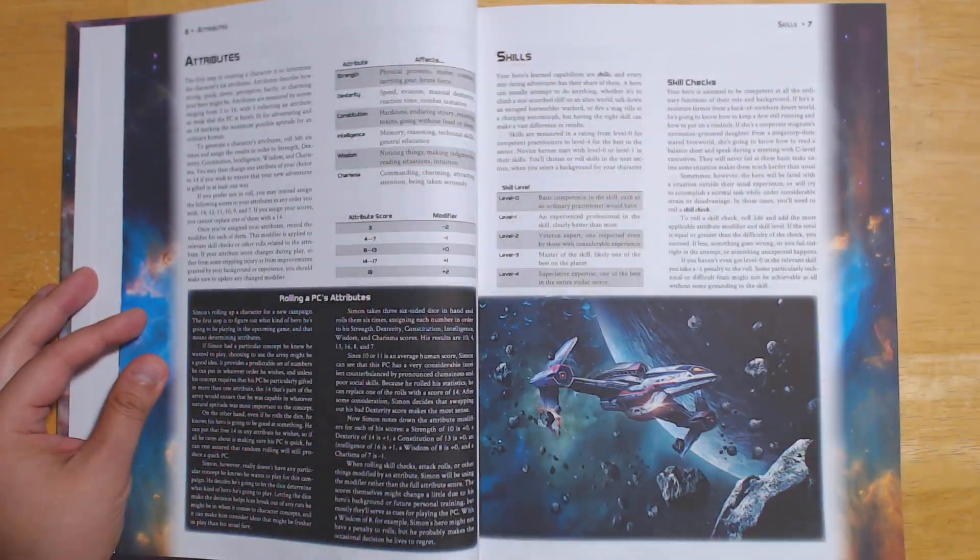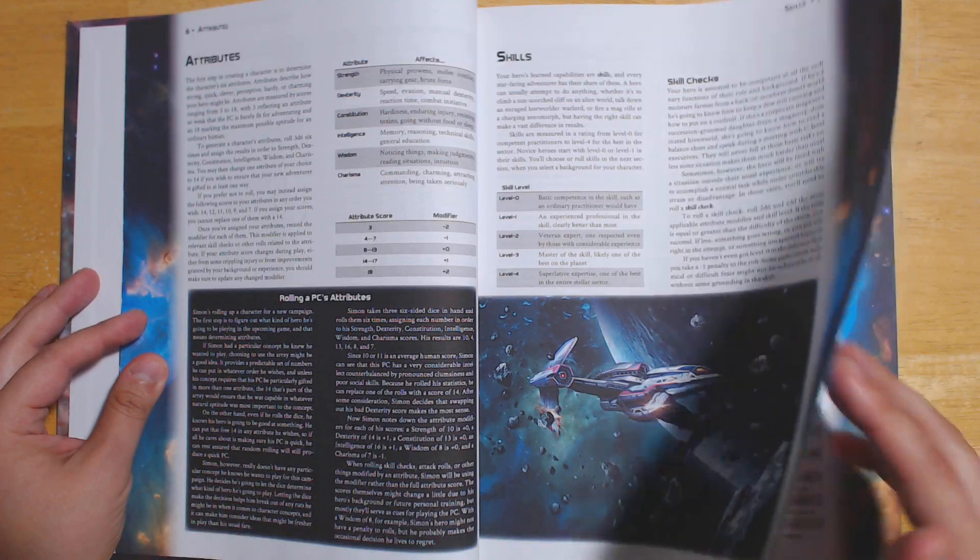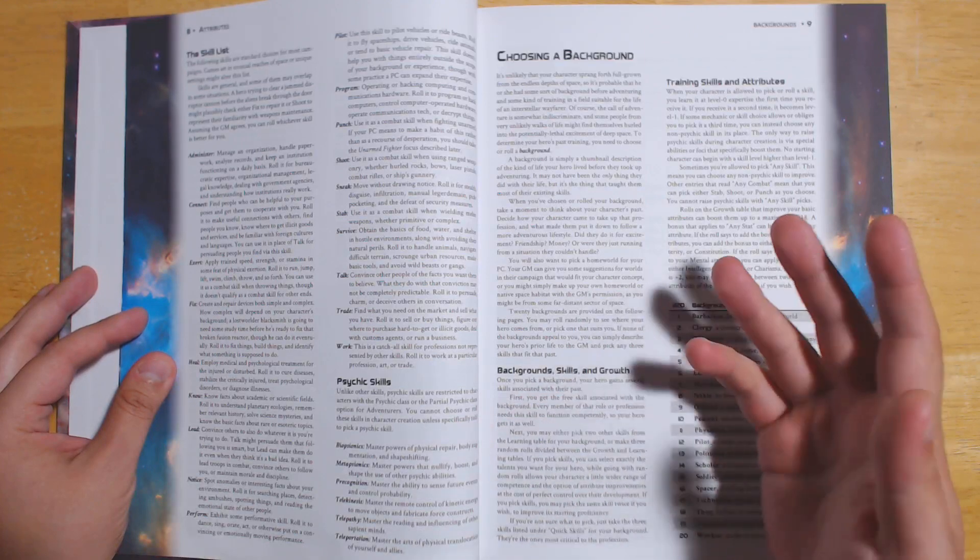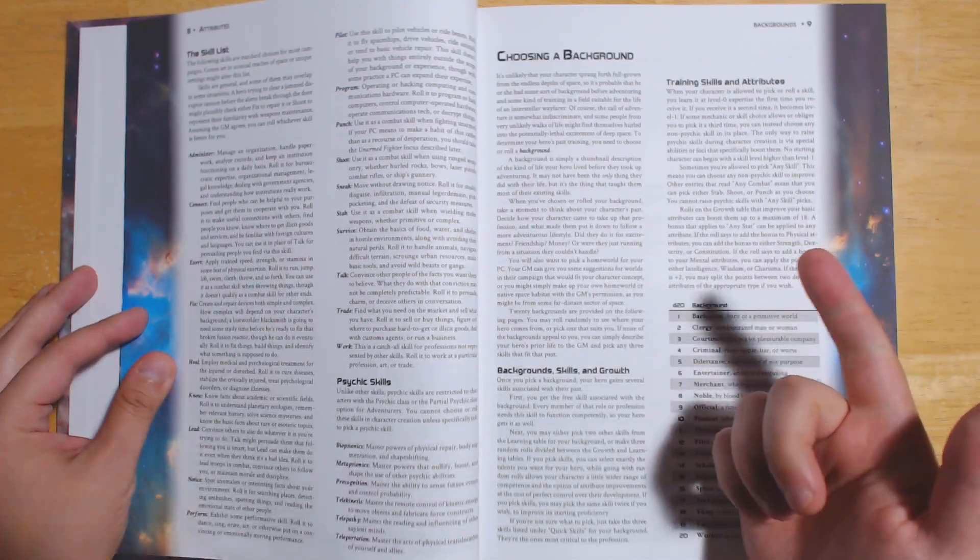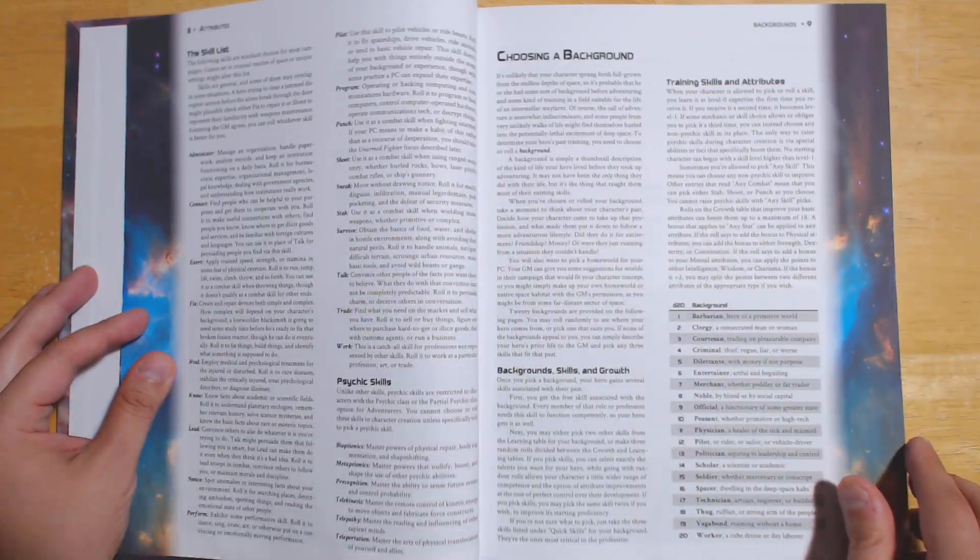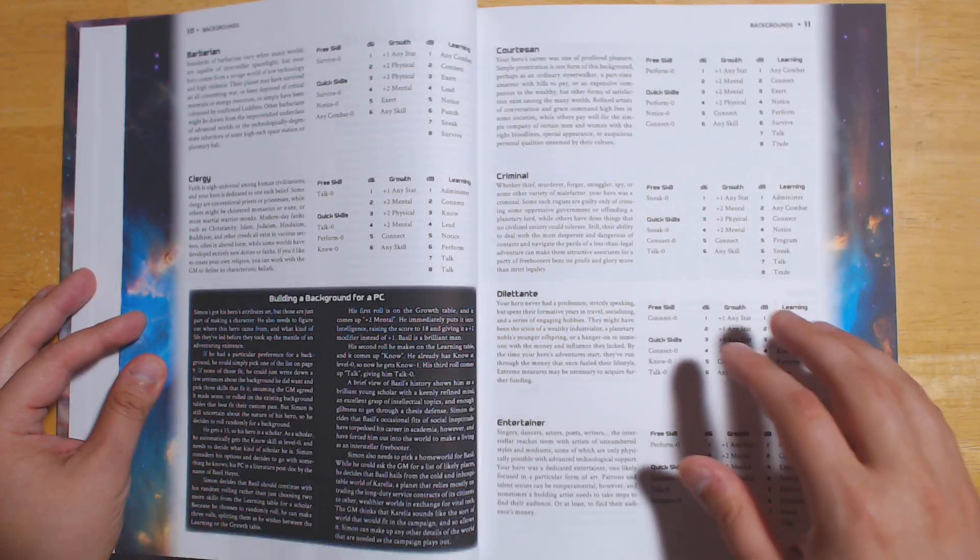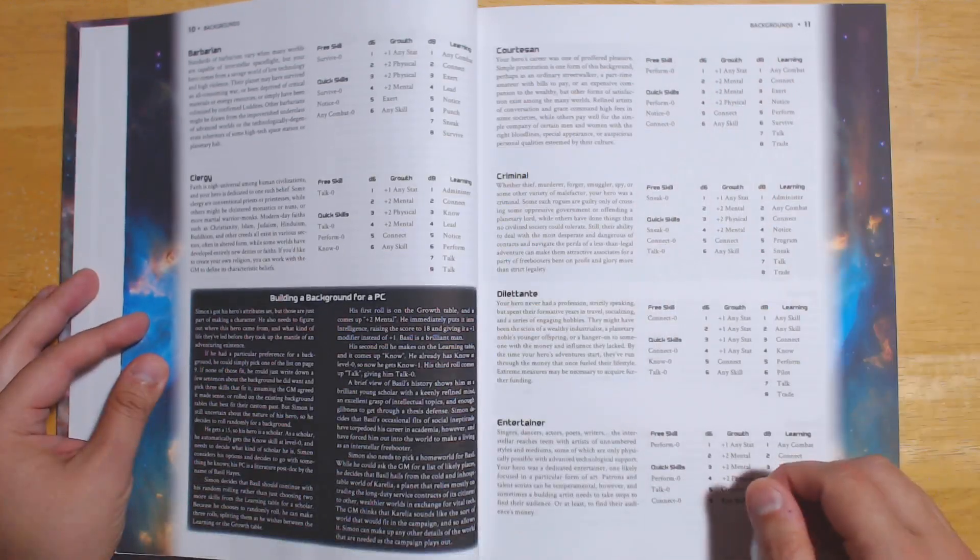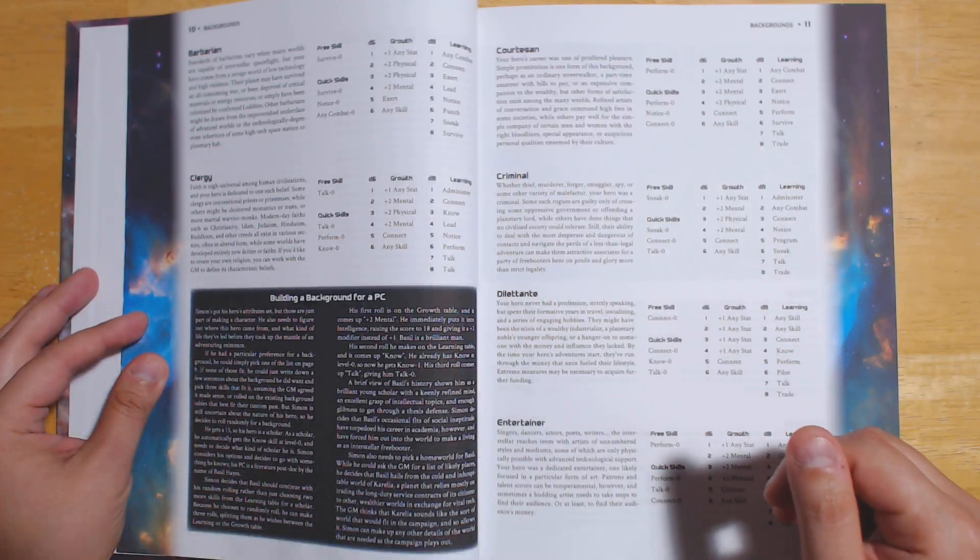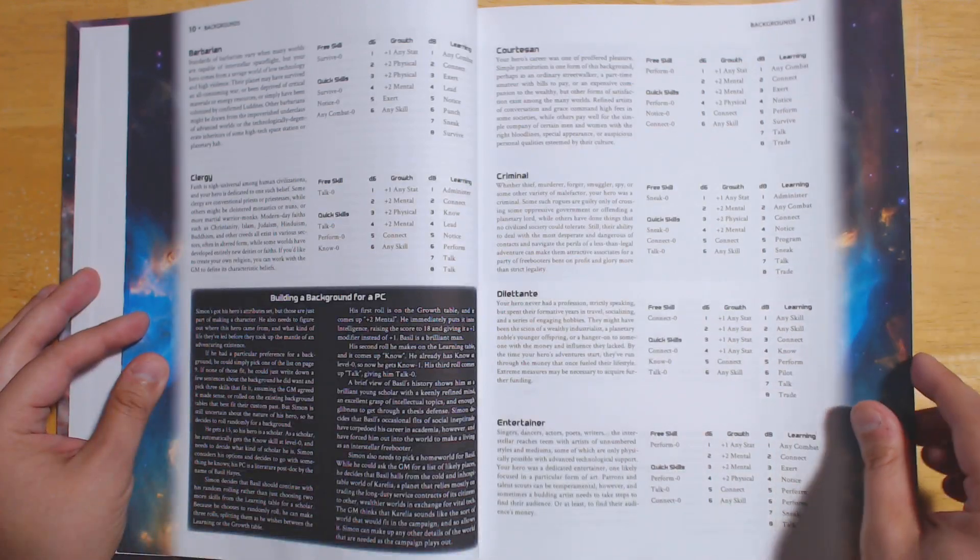We have your basic attributes. Nothing too surprising about that. We have skills, which work on a 2d6 system rather than on a d20 system. There's a wide variety of skills that you can choose from, along with psychic skills. Because there's three main classes. You have essentially your warrior, your thief, and your wizard, but they're reframed in sci-fi terms, where your wizard is a psychic with a wide variety of psychic powers. We have backgrounds that you can choose from, and we have a system for creating backgrounds for your character based on the skills that you choose. And just as we see throughout the rest of this book, he gives you a number of different ways to do that. Do you want to just pick your skills and really craft something? Do you want to randomize it? Do you want a mix of the two? You have options for everything.